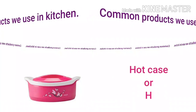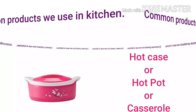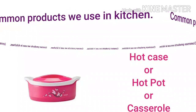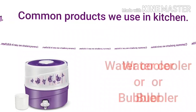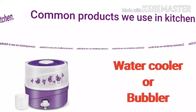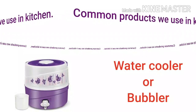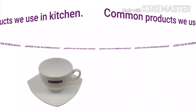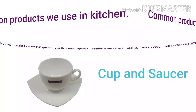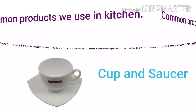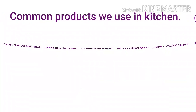The next product is jisme hum roti ya naan rakhte hai — it is known as hot case, hot pot, or casserole; we can call it by three names. Next we have water cooler, jisko hum second name de sakte hai: bubbler — so we can call the water cooler by the name of bubbler. Next, it's not a cup plate — it is cup and saucer; jo plate hai cup ke niche rakhte hai.